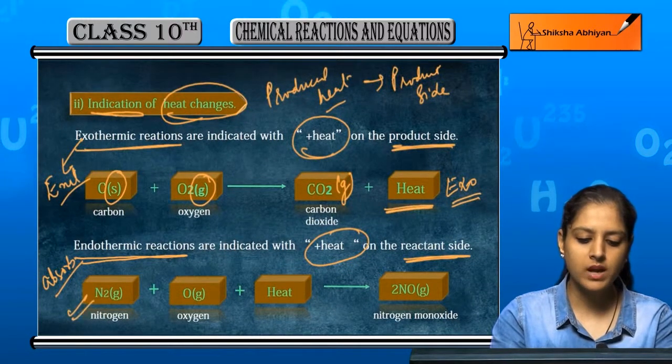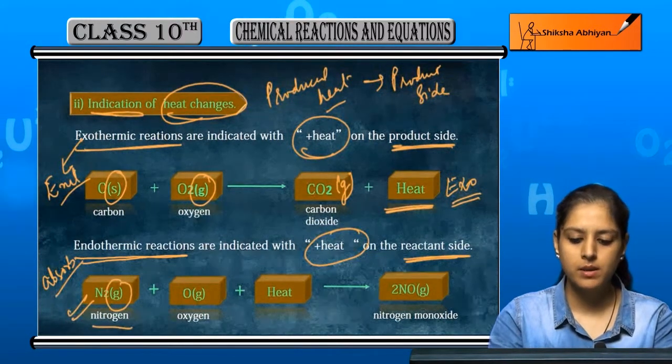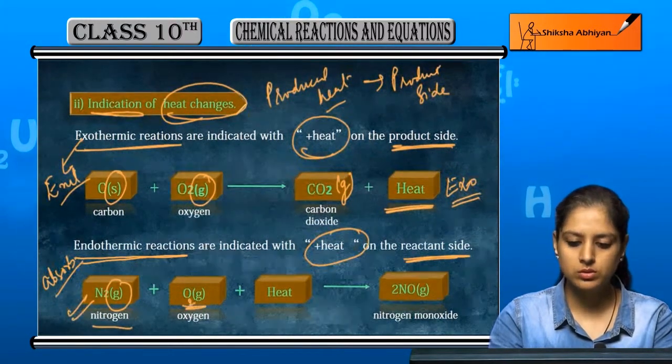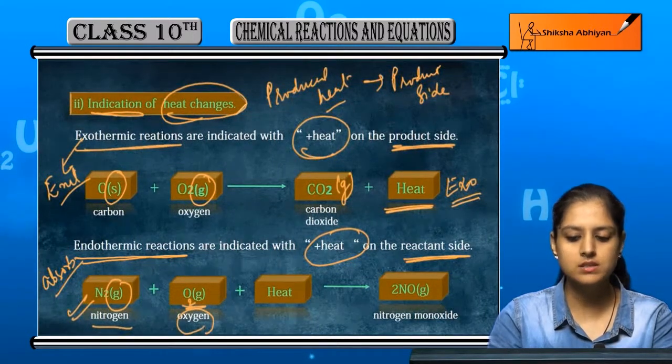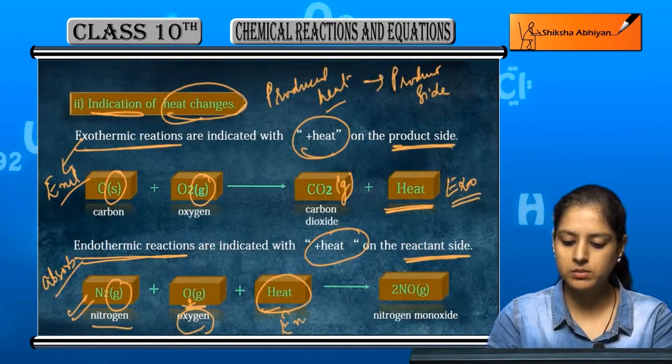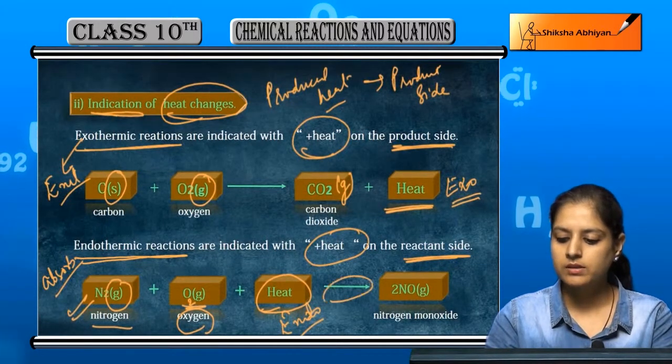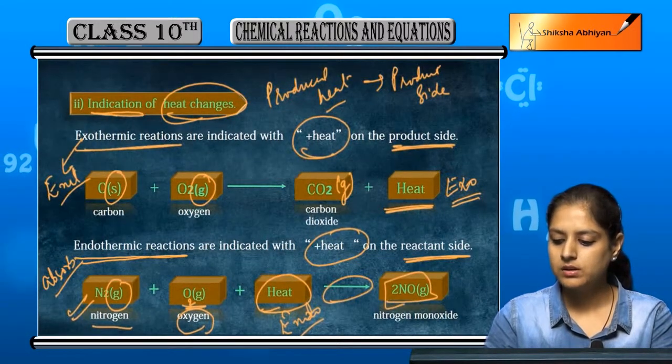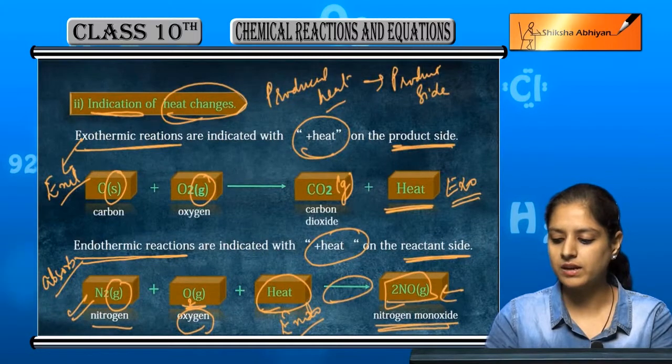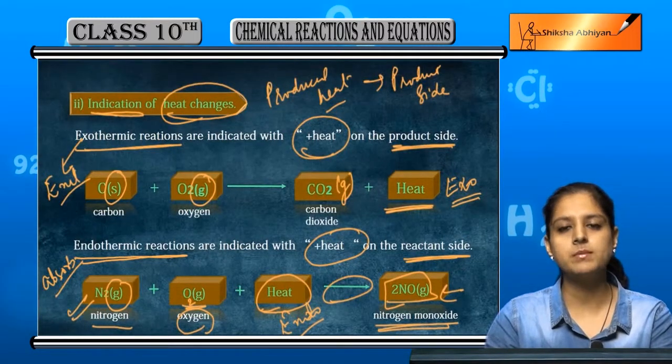So we have N2, that is nitrogen gas, plus O2, that is oxygen gas, plus heat, because it is an endothermic reaction. Then arrow, then nitrogen monoxide, that is a gas. We show heat changes.